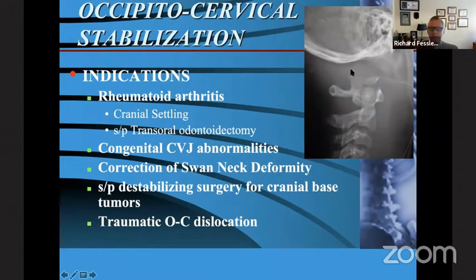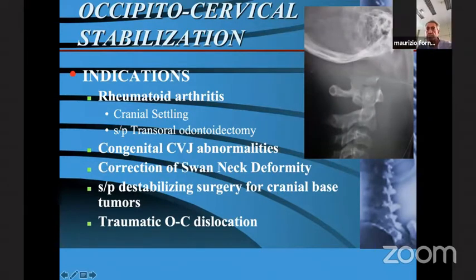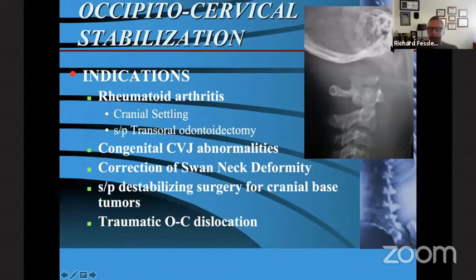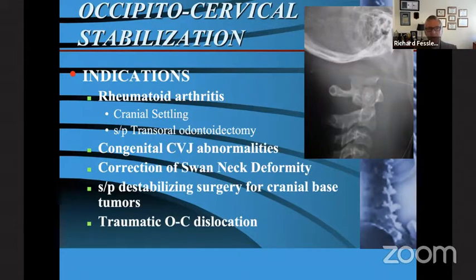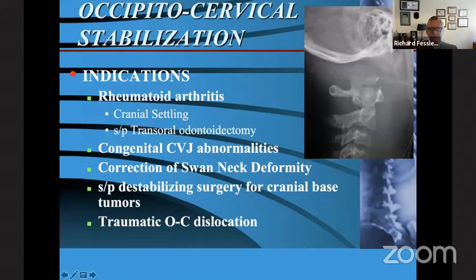Here you'll note a complete occipital-cervical dislocation — the foramen magnum is up here. Indications for occipital-cervical stabilization include rheumatoid arthritis with cranial settling, status post transoral odontoidectomy, congenital cranio-vertebral junction abnormalities, correction of a swan-neck deformity, status post destabilizing surgery for cranial base tumors, and traumatic occipital-cervical dislocation — if the patient is lucky enough to be alive following that.